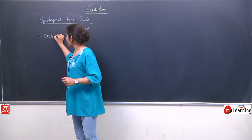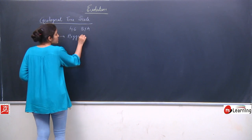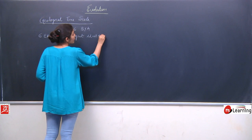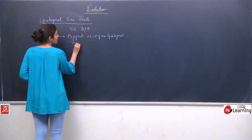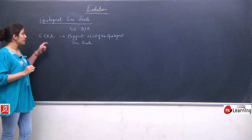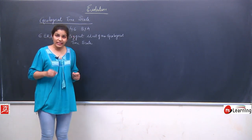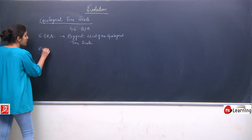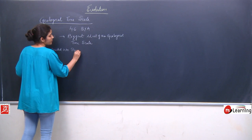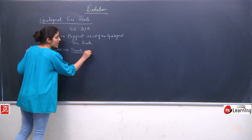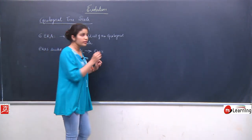The era is the biggest unit of the geological time scale. These 6 eras have been further divided into their subunit, which is known as periods. The eras have been divided into periods, and these periods have been further divided into epochs. Now we will see what the 6 eras were.